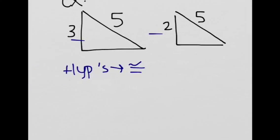So we have to use the Pythagorean theorem. This would be 5² - 3², and this would be 5² - 2².